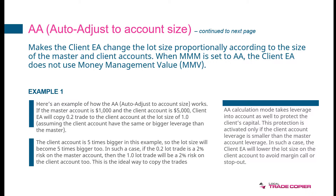Let's look at the first example. With AA set as the money management mode, if we have a master account of $1,000 and a client account of $5,000, and we need to copy a trade of 0.2 lot size, then the client account will get a lot size of 1.0 — one full lot.